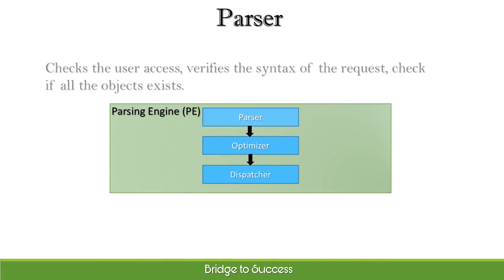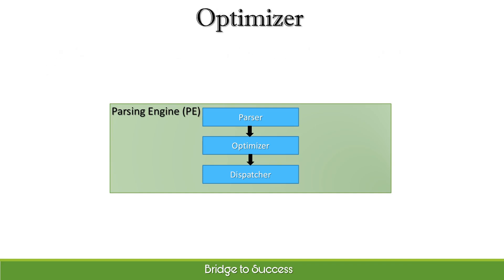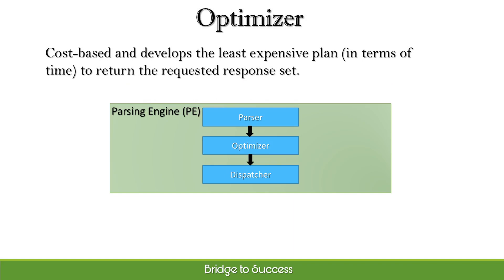The parser checks the user access, verifies the syntax of the request, and checks if all the objects exist. The optimizer is cost-based and develops the least expensive plan in terms of time to return the requested response set.